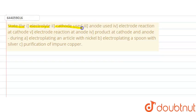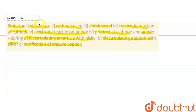The question asks us to state the electrolyte used, cathode used, anode used, electrode reaction at cathode, electrode reaction at anode, and the products at cathode and anode for three processes: electroplating an article with nickel, electroplating a spoon with silver, and purification of impure copper.